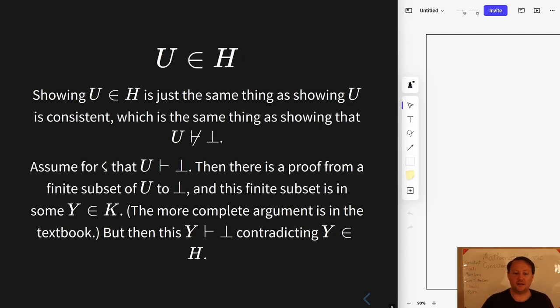That means that Y is inconsistent and therefore is not in H, but by our assumption from earlier is in H. So there's the contradiction. And now we have that U is consistent and all the rest of the proof is basically done because we've set it up to be basically done at that point.